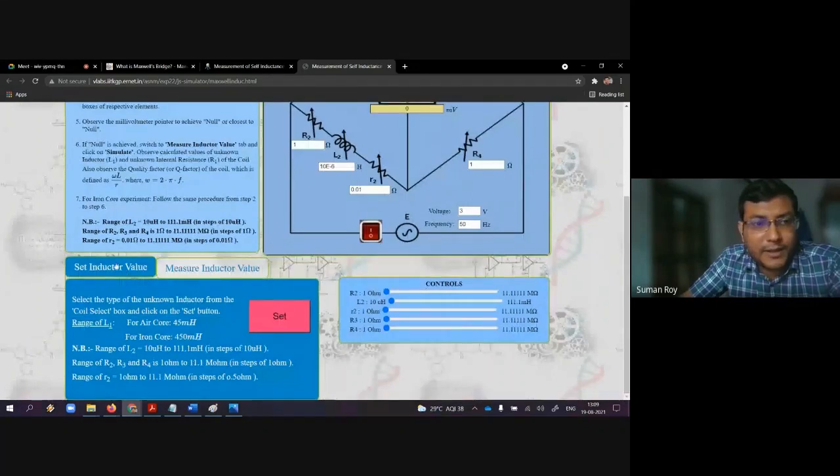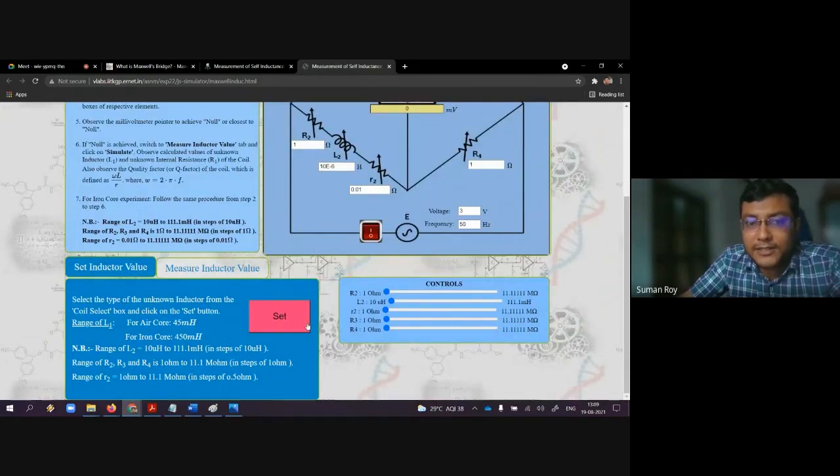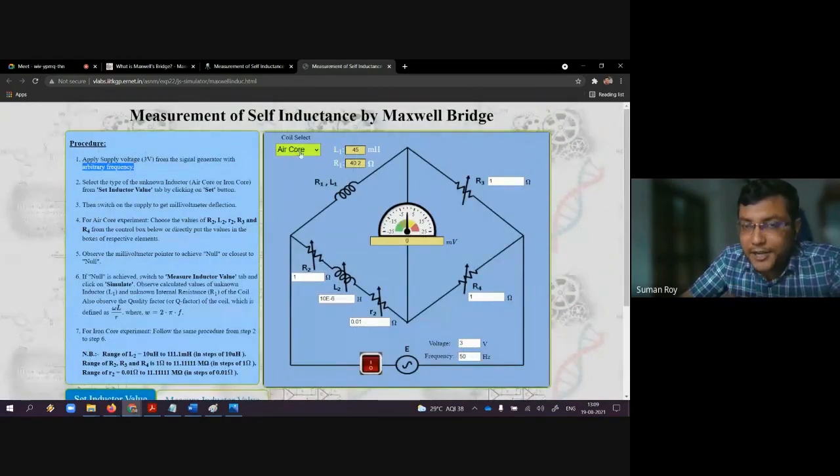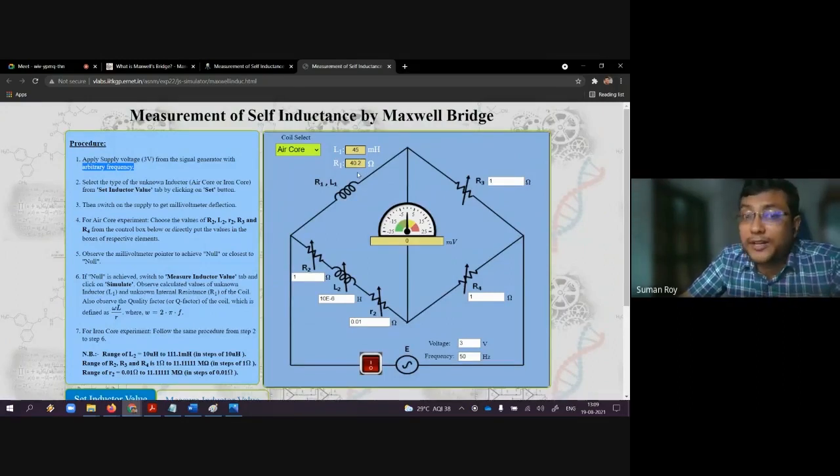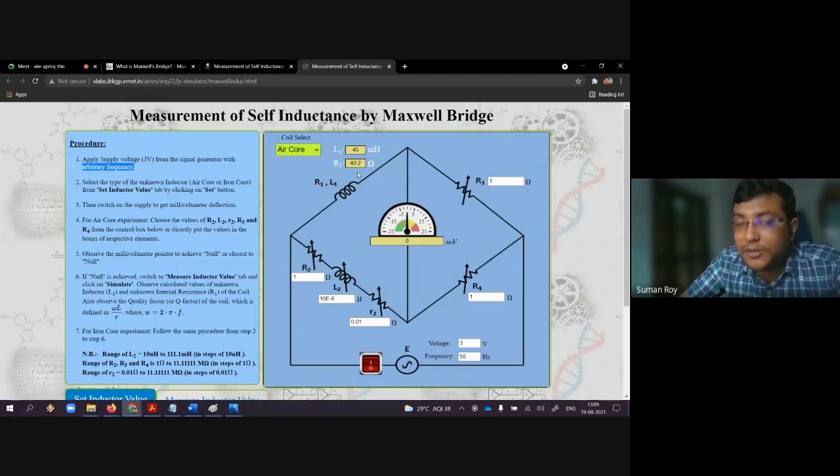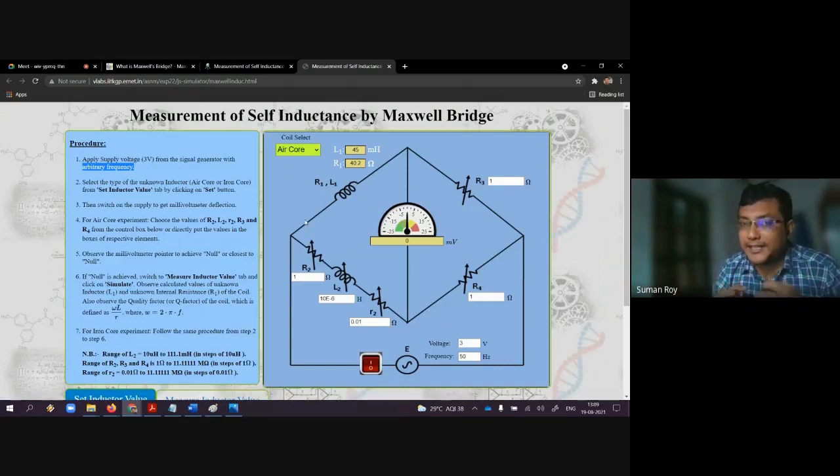After air core, you have to click on the set button below, set inductor value. If you click the set button, for air core we see that L1 and R1 is set as 45 mH and 40.2 ohms. However, these two readings are unknown to you. You have to find out what is the L1 and R1. Since you have selected air core, you are going to perform the experiment to find out 45 mH and 40.2 ohm.